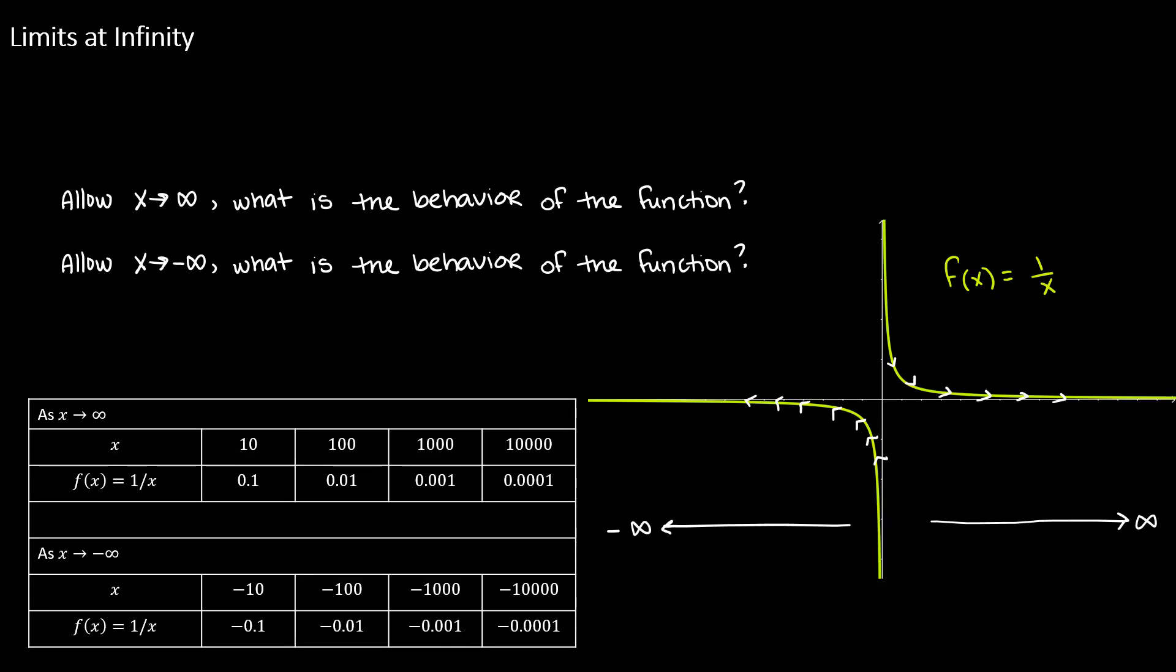We pick values of x that grow very quickly. For example, 10, 100, 1000, 10,000. And then we look at the function outputs. Notice that it starts off at 0.1, and then it gets even smaller as we move towards the right. Similarly, for the limit where x is going to negative infinity, we pick values that get negative very quickly. So negative 10, negative 100, negative 1,000, and negative 10,000. And looking at the corresponding function outputs, as we let x get closer and closer to negative infinity, our function outputs are becoming closer and closer to 0. They're all negative, telling us that it's below the x-axis, but it's still getting closer and closer to 0.